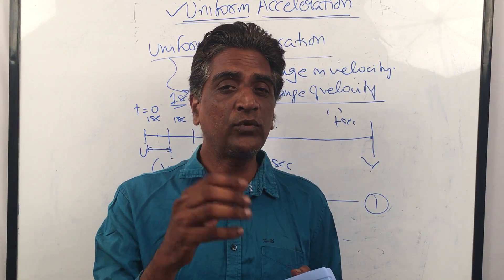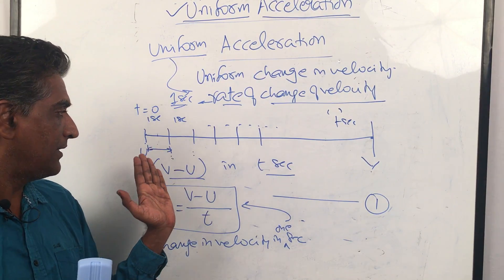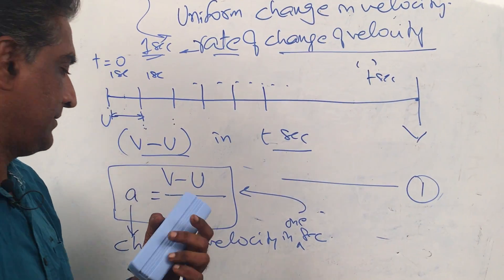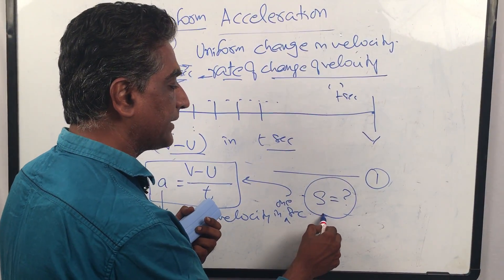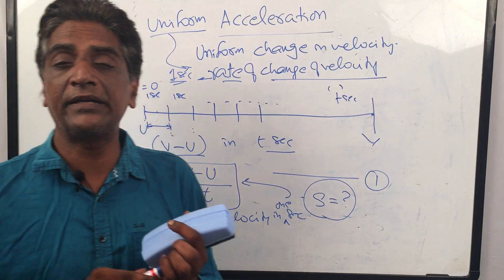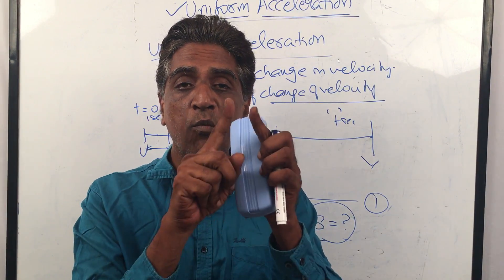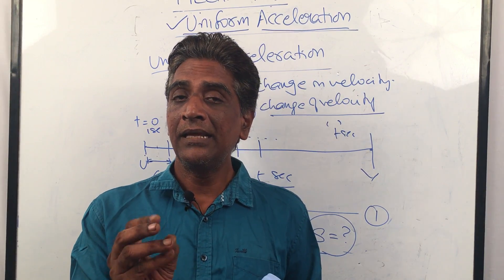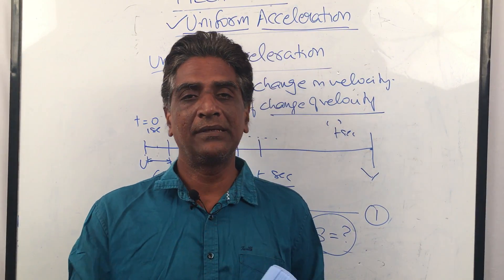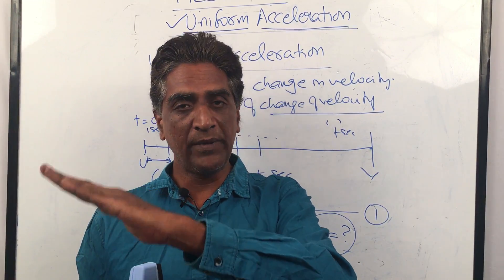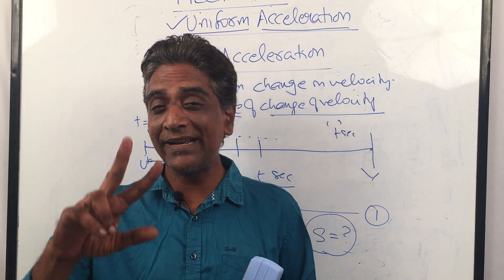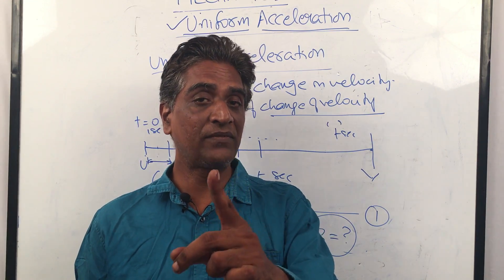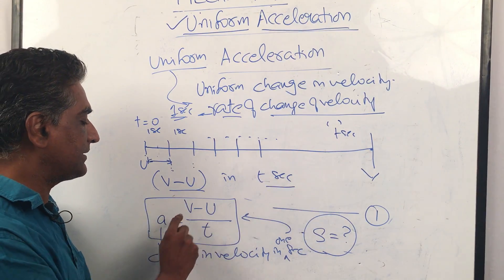This is the first kinematic equation, for uniform acceleration only: a equals v minus u by t. In the next lesson we will see how to get displacement — can we know the displacement from a to b? That gives us the second kinematic equation, and we have a third. These three core kinematic equations are used throughout mechanics for one-dimensional motion, but only for uniform acceleration. Acceleration is not just change in velocity — it is the rate of change of velocity. Rate means in one second: v minus u in t seconds is v minus u by t.